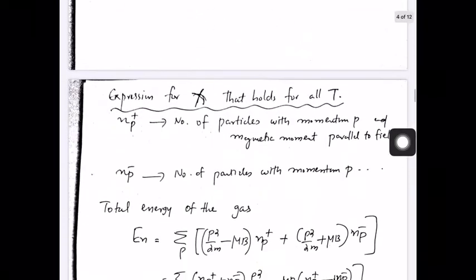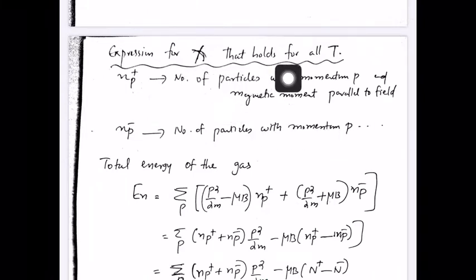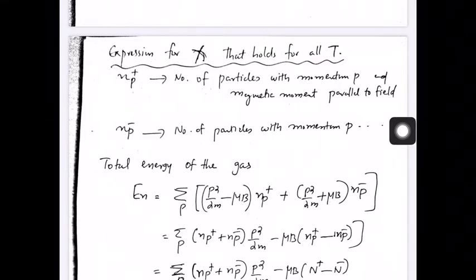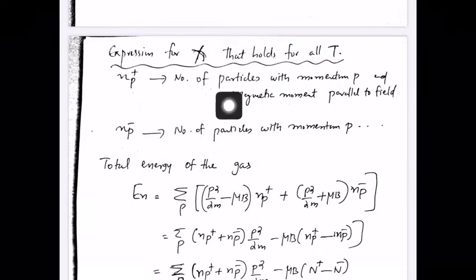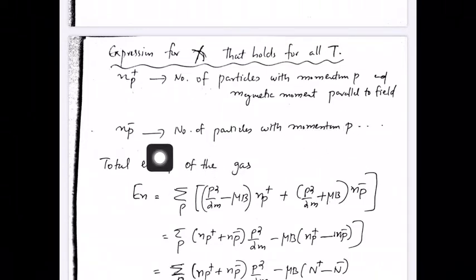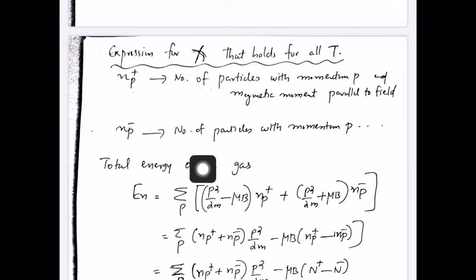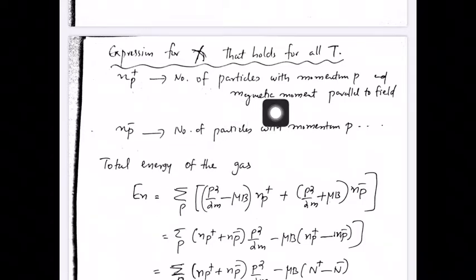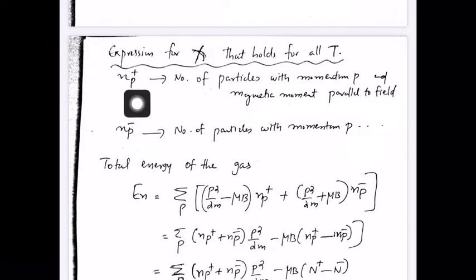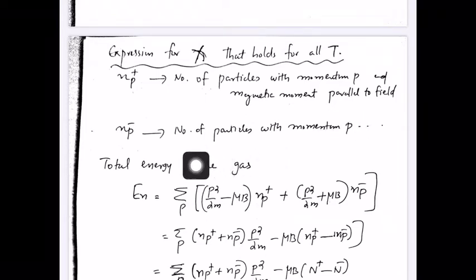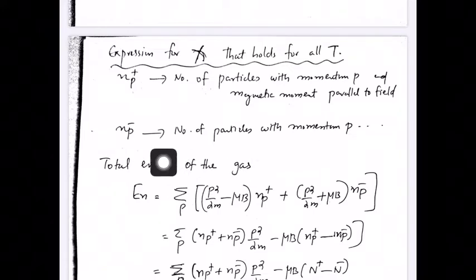Now what we are going to do is find an expression for susceptibility that holds for all temperatures. So we define a few parameters: n_p+ is the number of particles with momentum p and magnetic moment parallel to the field; n_p- is the number of particles with momentum p and magnetic moment anti-parallel to the field.